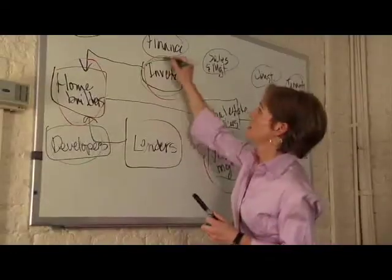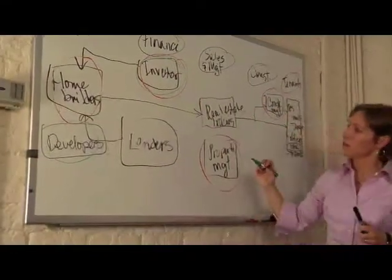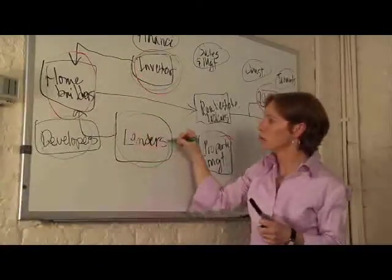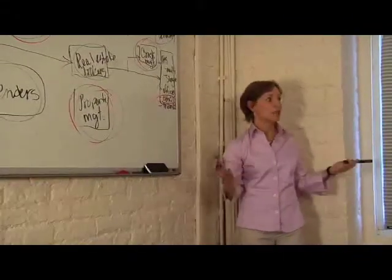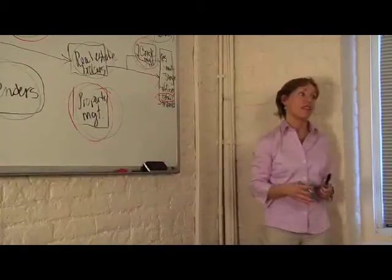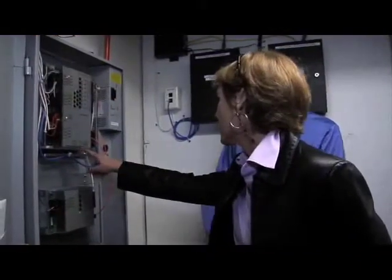One thing that surprised us once we did the value chain for real estate is that there was one type of firm that we weren't really aware of until we started this research — that basically has a footprint in nearly every box in the chain. A really big one is CB Richard Ellis, also Cushman Wakefield, Jones Lang LaSalle. They're not exactly household names, but they clearly have a lot of influence over real estate and really stand to have tremendous influence over energy use in buildings.